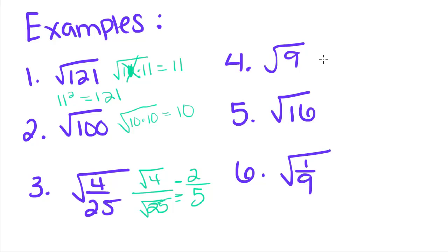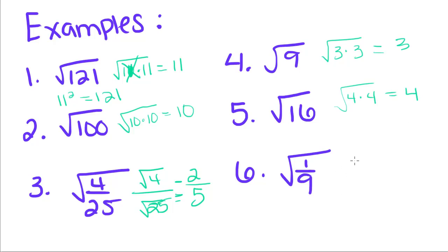The square root of 9 — 9 is just 3 times 3, and that gives us 3. The square root of 16 — 4 times 4. And then 1 over 9: since the square root of 9 is 3 and the square root of 1 is 1, it's just 1 third.